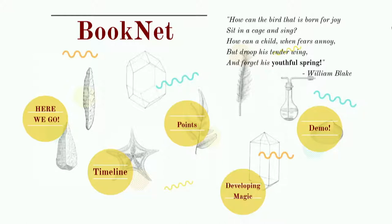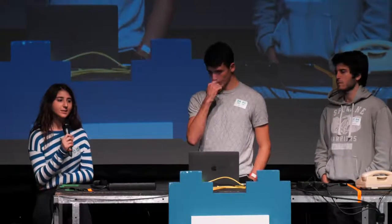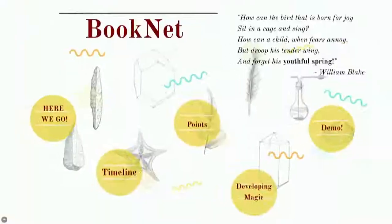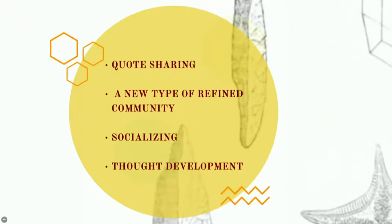So we developed a mobile application called BookNet. Our idea is to create a social platform where everyone can share their favorite quotes from different books, and start a discussion underneath those quotes to develop their thoughts and criticize those quotes and the books. We also want to offer our users a chance to create their own refined community, which consists of similar literary taste. We added a special feature for that — a location feature — and my partners will talk about it more.